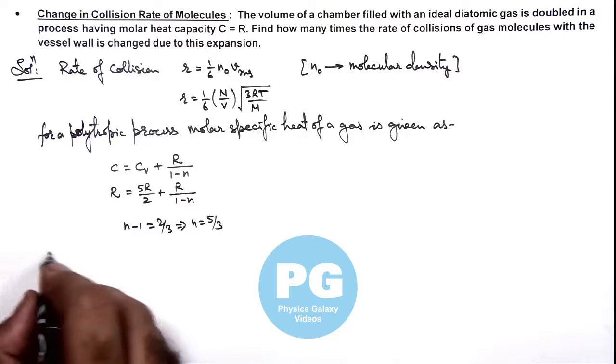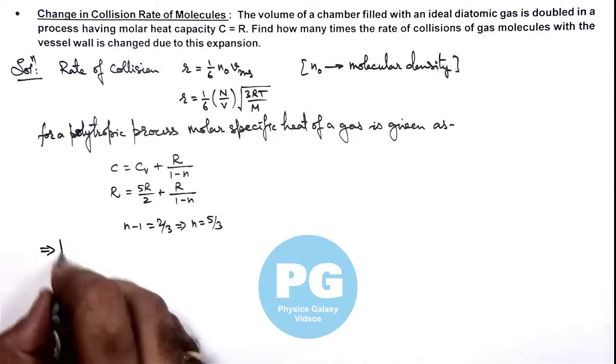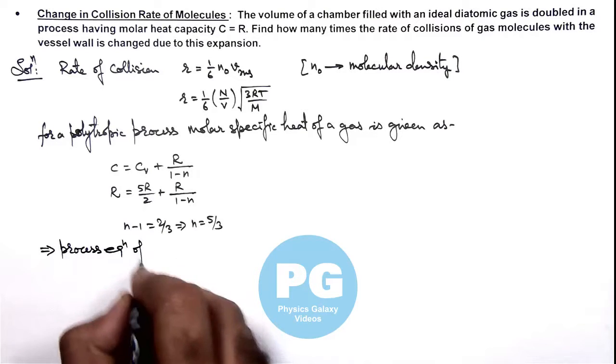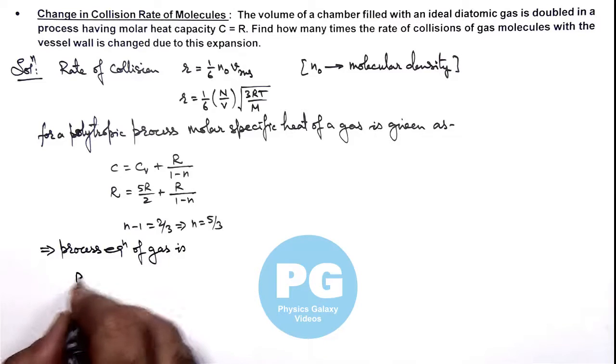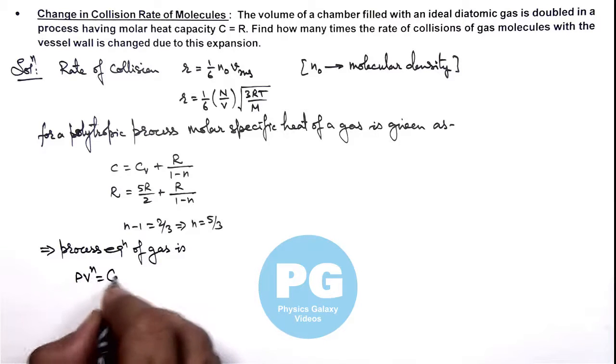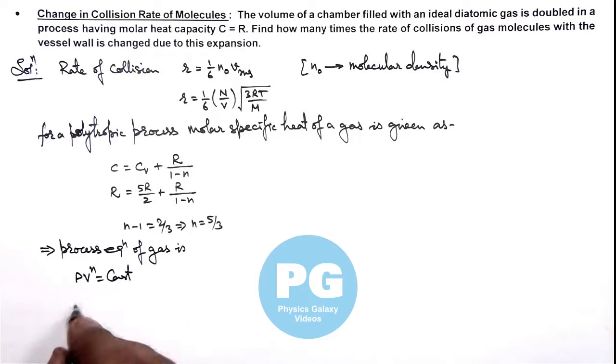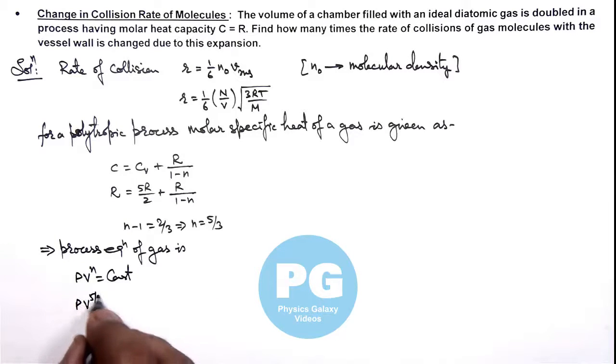So in this situation we can write the process equation of gas is, this is p v to power n is equal to constant. So here this is p v to power 5 by 3 is constant.